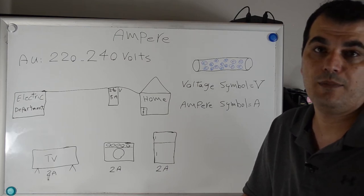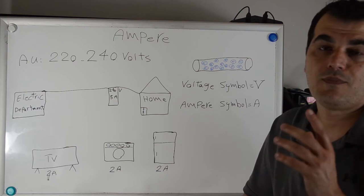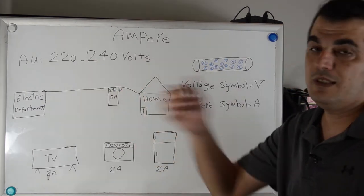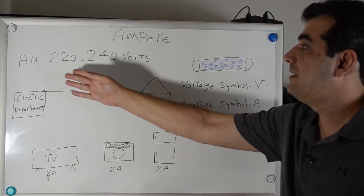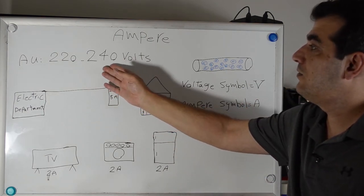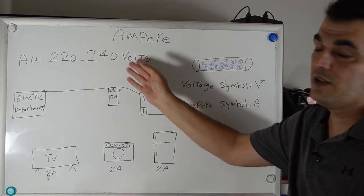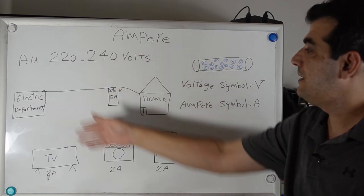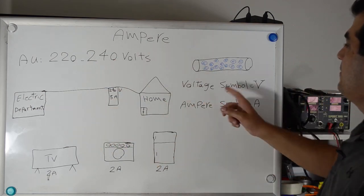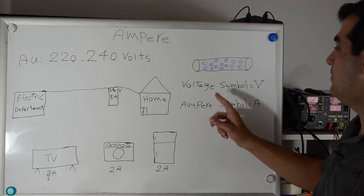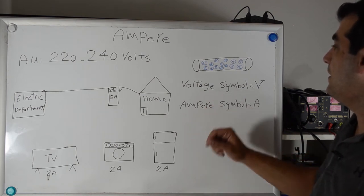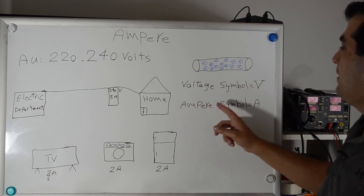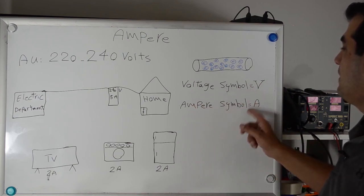Now let me give you an example. First, I talk about measuring your power consumption. Australian power electricity is between 220 and 240 volts. Volts is the same as voltage. Before I explain this picture, please look at that one. It's very important. Take notes please. Voltage symbol is capital V, and ampere symbol is capital A.